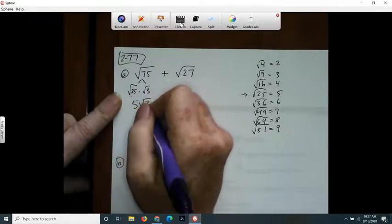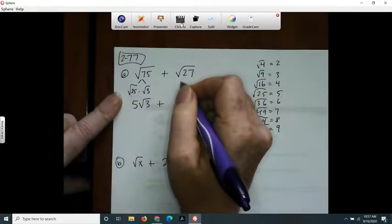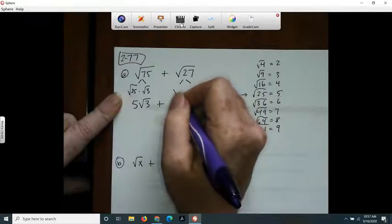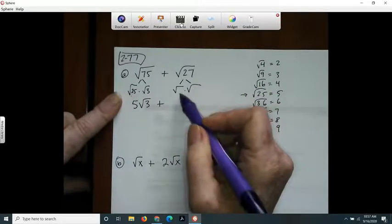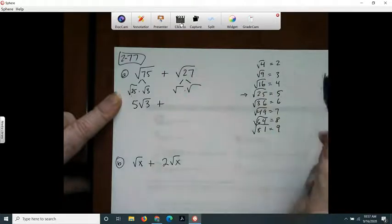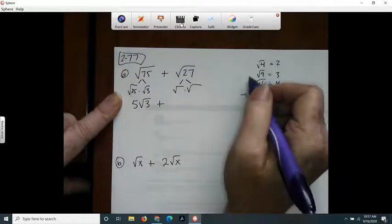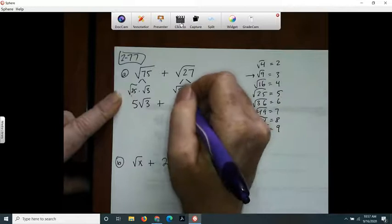Plus, this one, when I break it apart into two pieces, a square root that goes evenly into 27 is 9. 9 times 3 is 27. So the square root of 9 is 3.